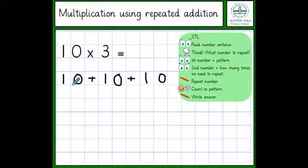The next step is we need to count in the pattern of our 10s and get the answer. So 10, 20, 30. And we write the answer by our equal sign.